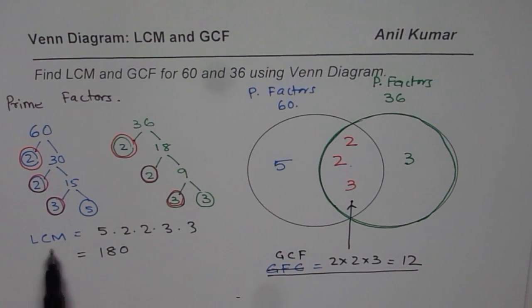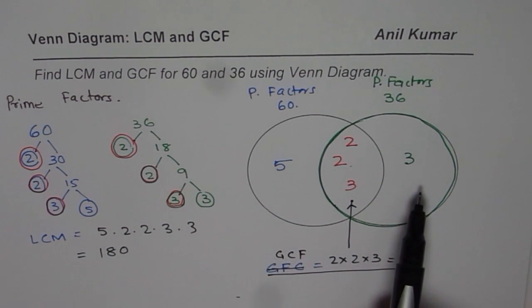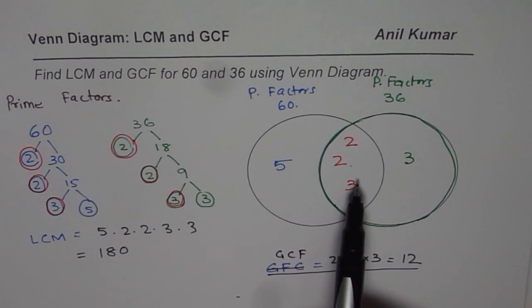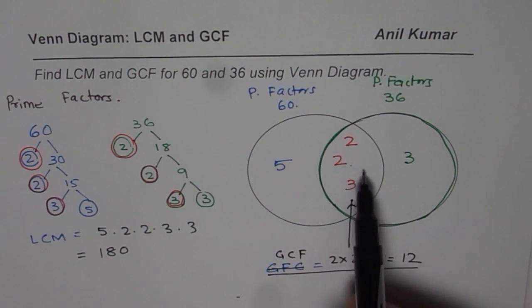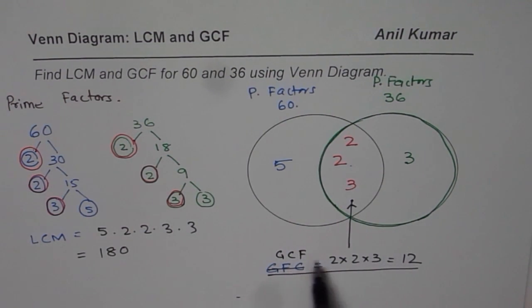So lowest common multiple is multiple of all these factors which are placed in the Venn diagram. And greatest common factor is when all the common factors are multiplied together, they give you the greatest common factor. So that is, in short, the way to find LCM and GCF using prime factorization and Venn diagram. I hope that helps. Thank you.